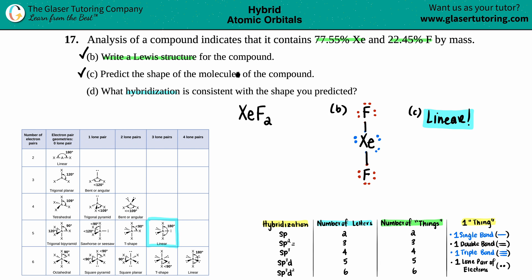Just know that the number of letters corresponds to the number of things that are around the element. And one thing is either classified as one single bond, one double bond, so even though you have two bonds there, it's still classified as one thing, one triple bond, and one lone pair. So let's look for xenon. What does xenon have? How many things does xenon have? Well, it's got one single bond, that's one thing. It's got another single bond, that's two things. And it's got one lone pair, that's three things, four things, and five things. I won't classify these as part of xenon because they're part of fluorine. So for xenon, I have five things. So that's five letters. And the five letters is SP3D. So for xenon, the hybridization is SP3D.